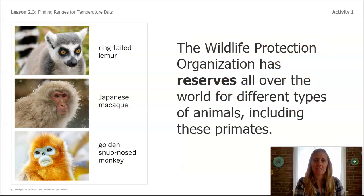The Wildlife Protection Organization has reserves all over the world for different types of animals, including these three primates. The ring-tailed lemur at the top, the Japanese macaque in the middle, and the golden snub-nosed monkey at the bottom.